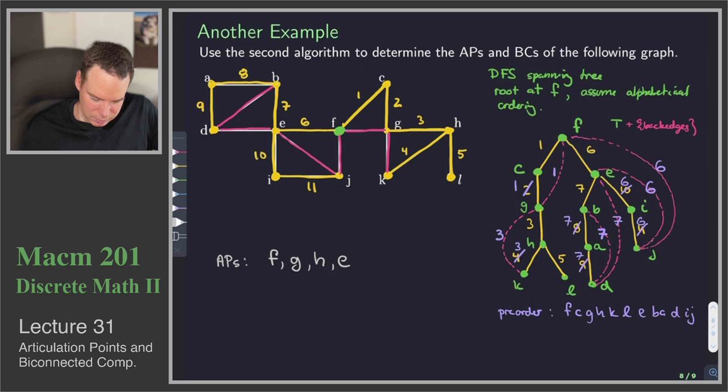But every other vertex has the same. So there's our APs.